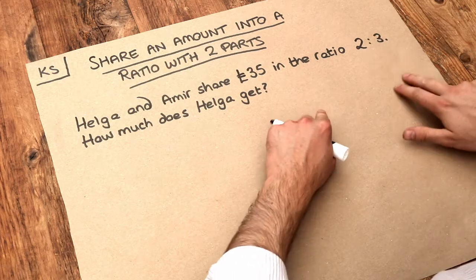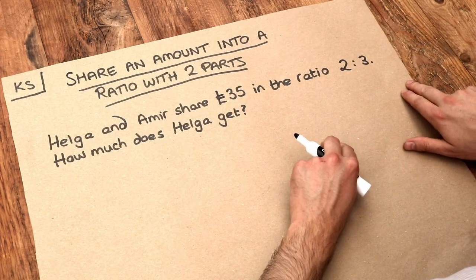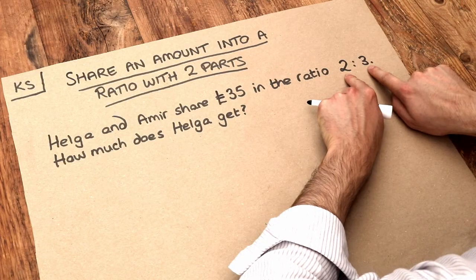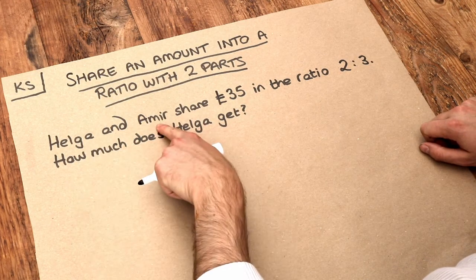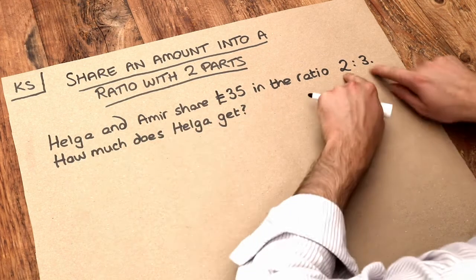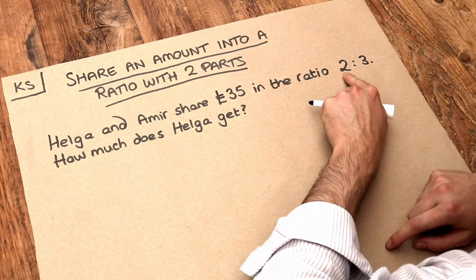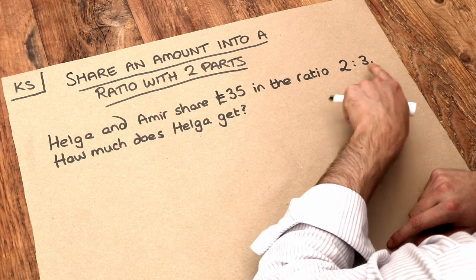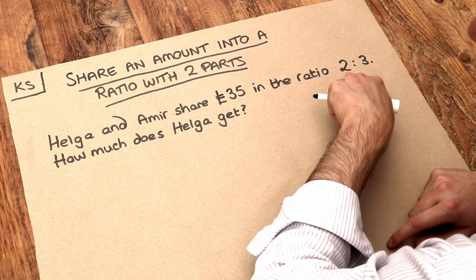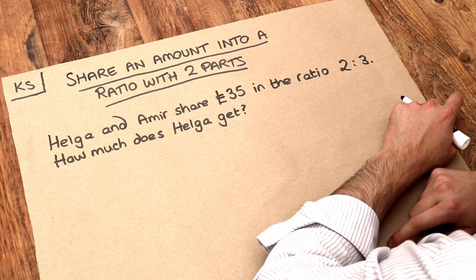Remember what a ratio means is the relative size of two things. What this ratio is saying, if it's the ratio of what Helga gets to what Amir gets, is that for each two parts that Helga gets, Amir gets three parts. It could be for each two pounds Helga gets, Amir gets three pounds.